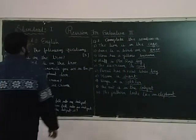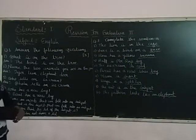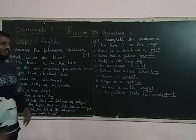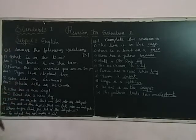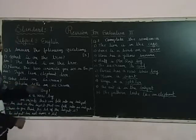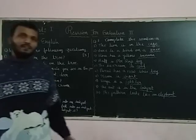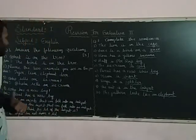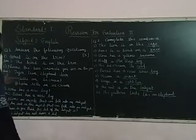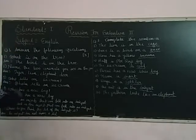Question number 1, answer the following questions. First number: What is on the tree? So the answer is: The bird is on the tree.